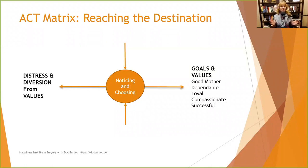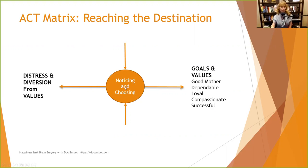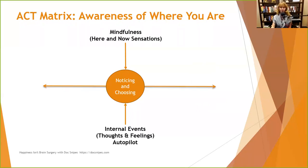Once you've identified your values, every time a situation comes up, you notice there's a crossroads, and you choose the thoughts and behaviors that will get you closer to your values and goals. And you might think, well, that seems like common sense — and it does. But a lot of times those automatic thoughts creep up and distract us, which takes us to the top and bottom of the matrix.